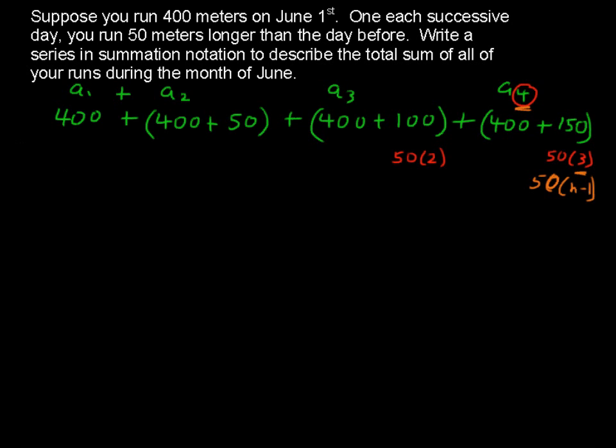So, let's use the summation notation. We have, well, just write this out. The nth term, a sub n, equals the 400 plus 50 times n minus 1.